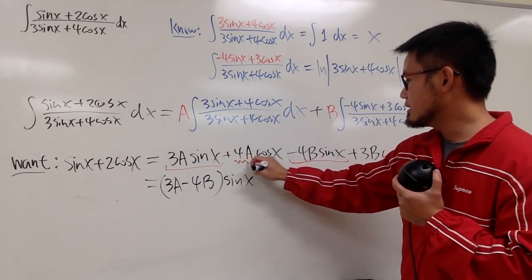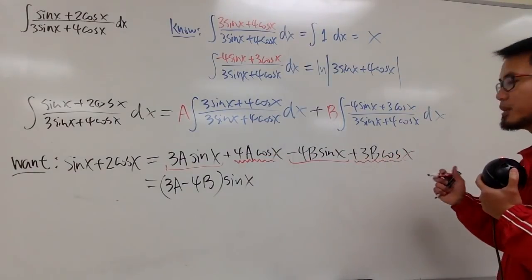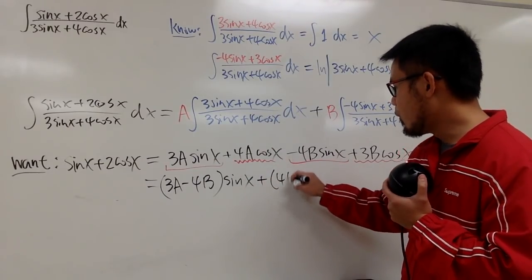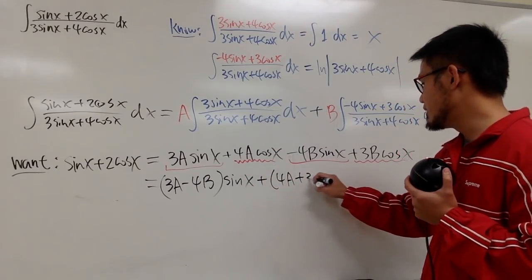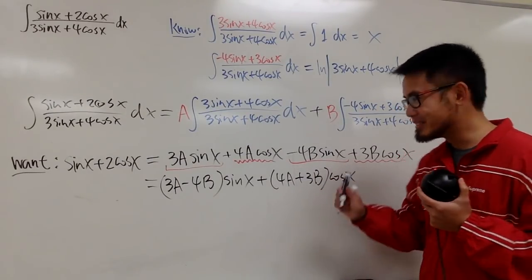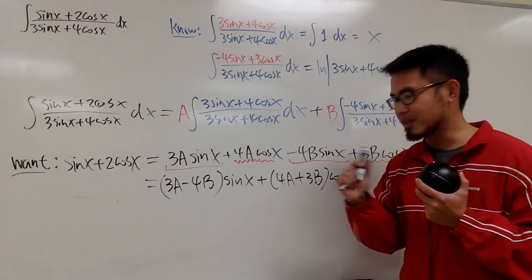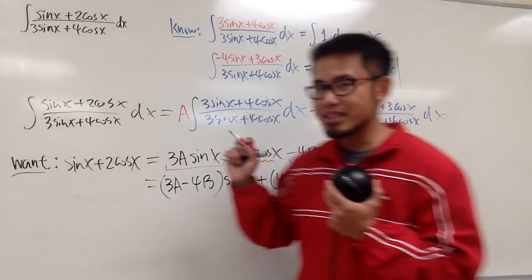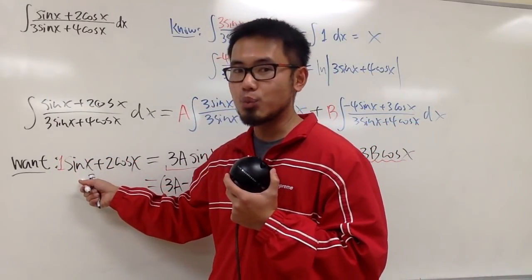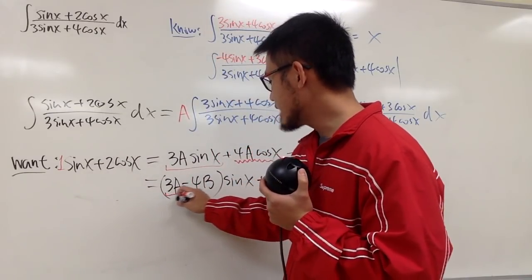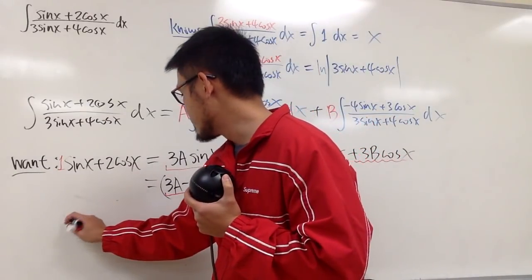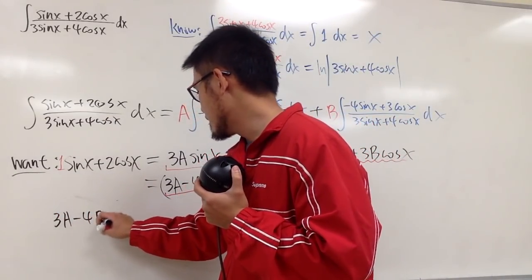And then, this is 4a cosine x plus 3b cosine x. Once again, I will factor out the cosine x, and I will just put down plus 4a plus 3b, and then multiply by cosine x. This is kind of similar to partial fraction, in the clearer way, I would say. And now you see, on the left-hand side, the coefficient, the number in front of the sine x is 1. So that means this guy, 3a minus 4b has to be 1. So that's the first condition. So let me just put this down. 3a minus 4b has to be 1.